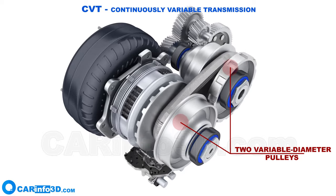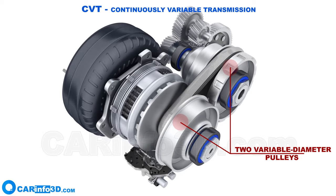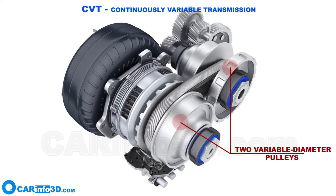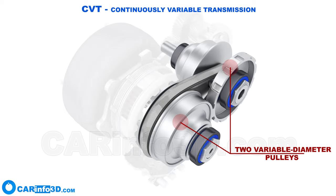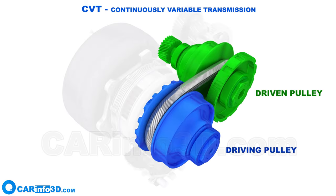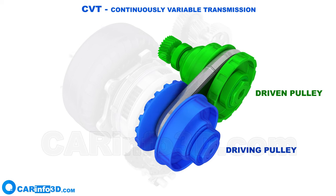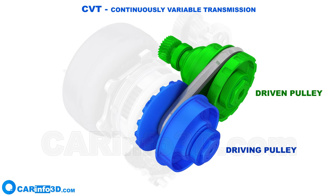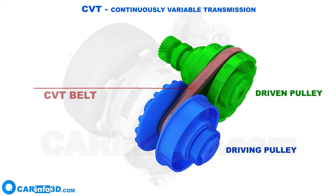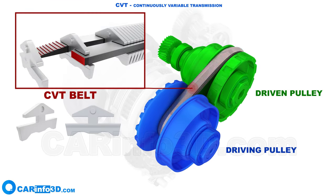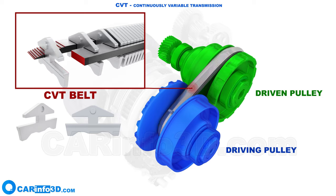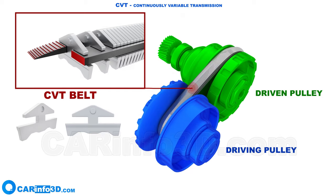As a result, the CVT employs optimal gear ratios. One pulley is the driving pulley, while the other is the driven pulley. Transmission between the pulleys is accomplished by the use of a special belt or chain — in this example, it is a steel belt made up of multiple links.